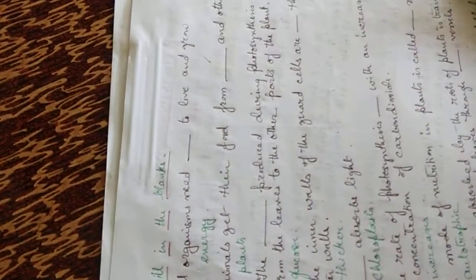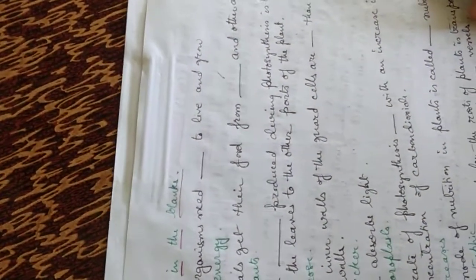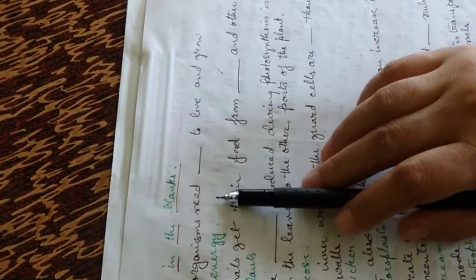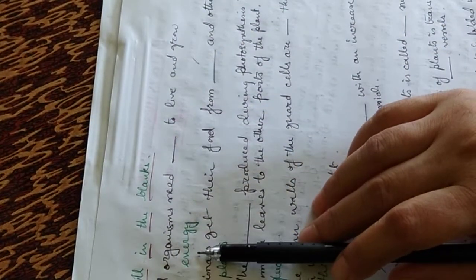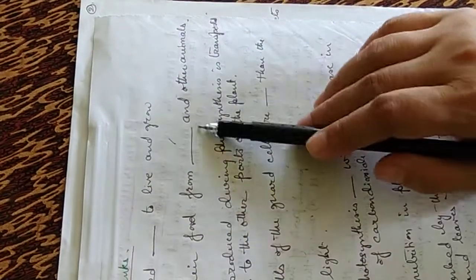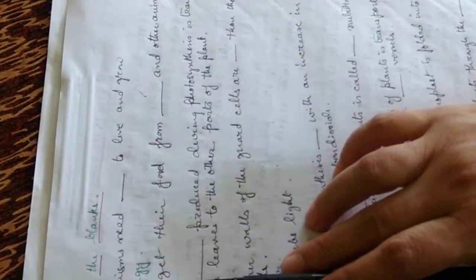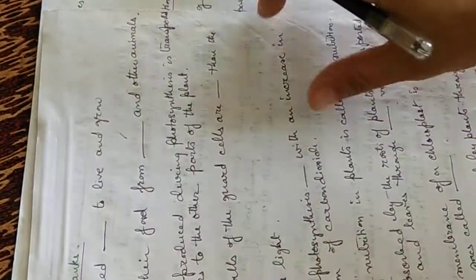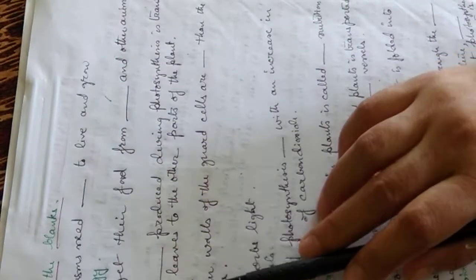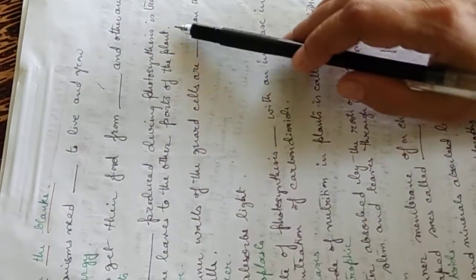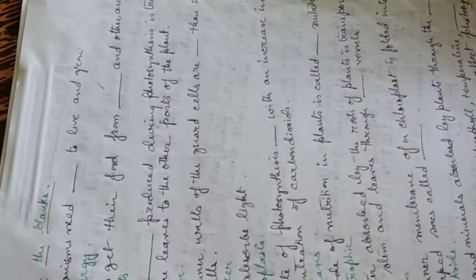Then we come to the fill in the blanks section. All organisms need dash to live and grow. They need energy. Animals get their food from dash and other animals. The answer is plant. The dash produced during photosynthesis is transported from the leaves to the other parts of the plant. The answer is glucose.